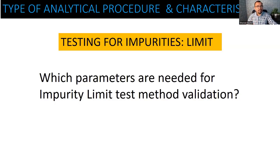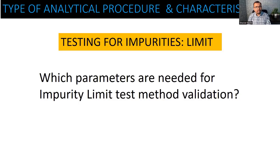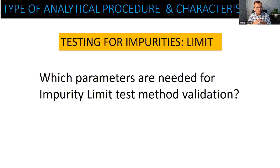Now let's talk about which parameters you are going to consider if you really want to validate the testing procedure. Let us pick the first one, which is precision — the same way we picked it up during the identification test. As we are very clear, during precision, quantitation is required — quantification is required.